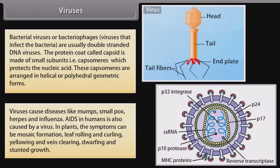AIDS in humans is also caused by a virus. In plants, the symptoms can be mosaic formation, leaf rolling and curling, yellowing and vein clearing, dwarfing and stunted growth.